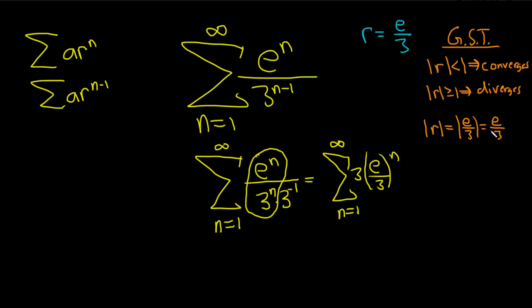Well, e is like 2.7 etc., so it's smaller than 3. So this fraction is smaller than 1. Therefore our series converges by the geometric series test.